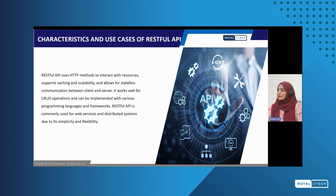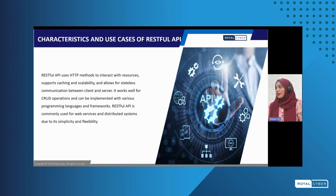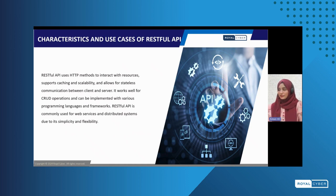Now let's talk about some use cases and characteristics of RESTful API. As mentioned, REST APIs use standard HTTP methods like GET, POST, PUT, and DELETE to communicate with the server and for data exchange. RESTful APIs are a perfect design pattern for mobile apps, social media, and e-commerce applications. Talking about the characteristics of a RESTful API, there are six common characteristics: client-server architecture, cacheability, layered system, code on demand — which is optional — uniform interface, and statelessness, which I'll be explaining in detail further ahead.